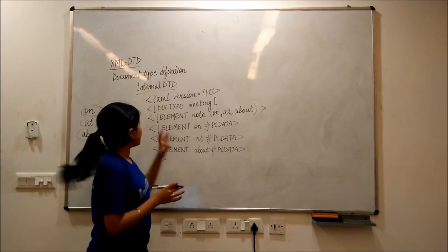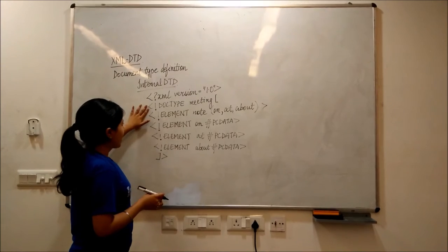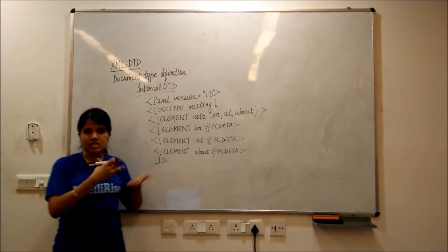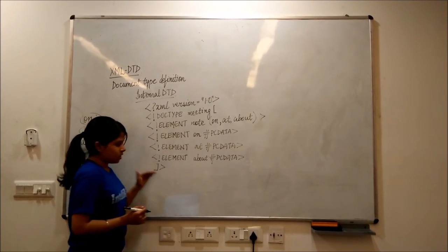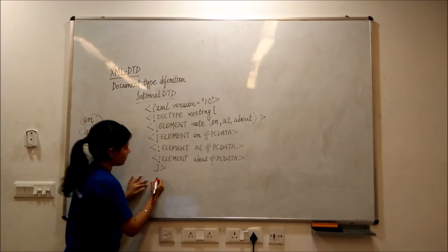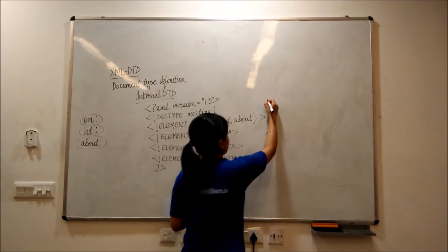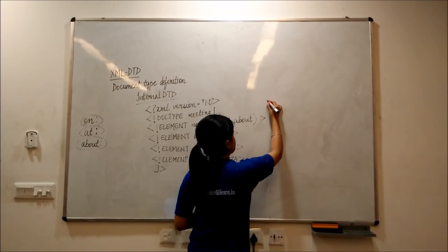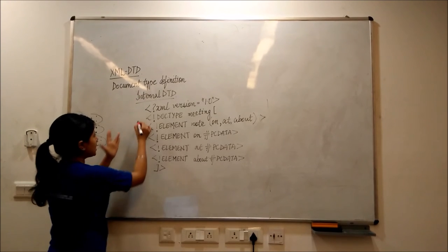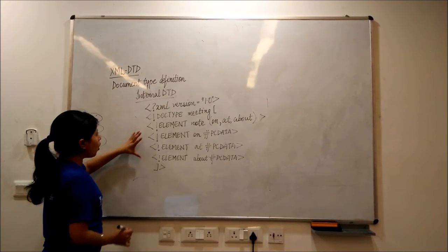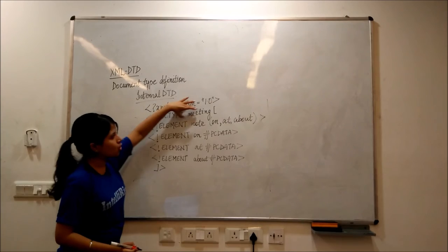And it's really important that whatever brackets are being once started, they should be enclosed properly. After this, what we start is, since it's an internal DTD, so this DTD document is all declared inside the doc type.